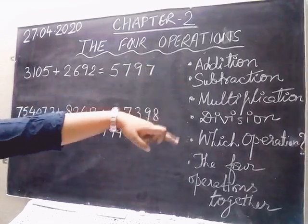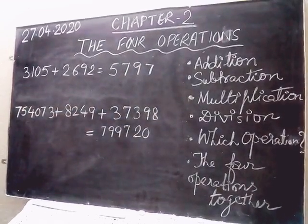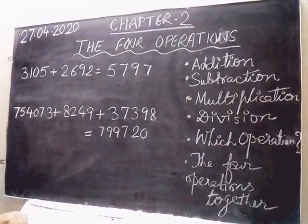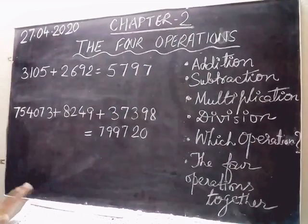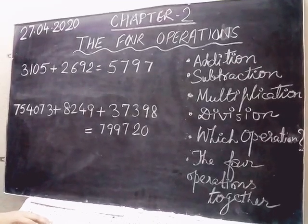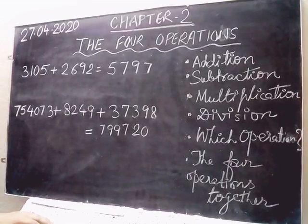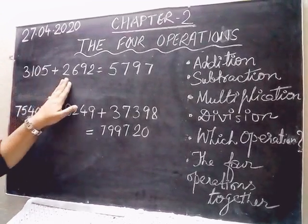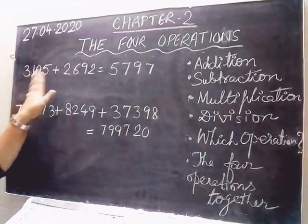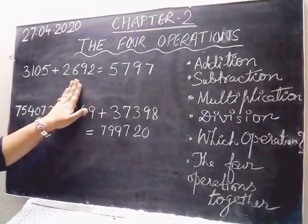Let's begin with addition. For addition, we need at minimum two numbers. Unless two numbers are there, how are you going to add? If I give you three and ask you to add, what will you add three with? So at least we need two numbers.